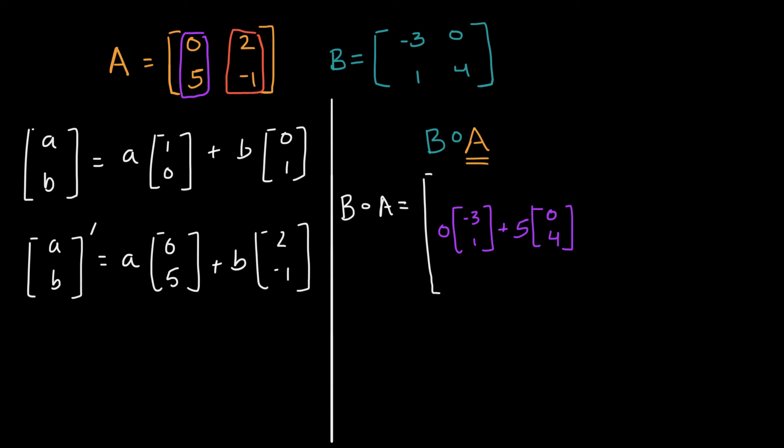And then let's think about this second vector right over here, two negative one. If you transform that using B, what are you going to get? You're going to get two times negative three one. So I'll write it here. Two times negative three one, plus negative one, or maybe I'll just write it this way, minus one times zero four.